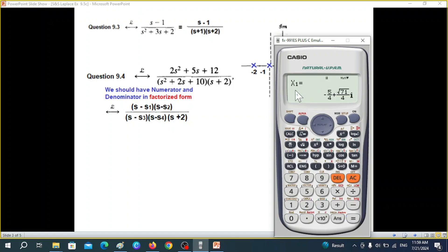So this is the first root x1 which we are calling here s1 and we can write it in decimal forms. So it's minus 1.25 plus 2.1656 so we can write 2.11 i or j.